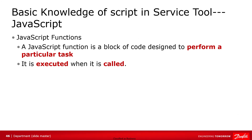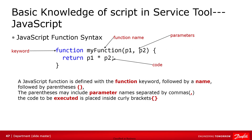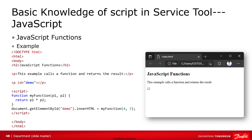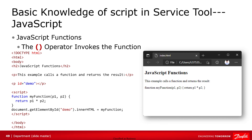A JavaScript function is a block of code designed to perform a particular task. It is executed when something calls it. A JavaScript function is defined with the keyword 'function', followed by the function name, followed by a pair of parentheses. The parentheses may include parameters separated by commas. The code to be executed is placed inside the curly braces. In this example, we define a function named myFunction. It has two parameters, p1 and p2. The code to be executed returns the product of p1 and p2. When we call a function, parentheses should be followed by the function name. Otherwise, the function object is returned instead of the result.